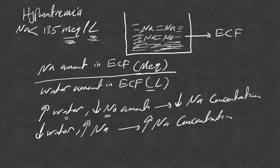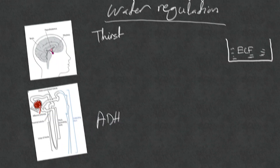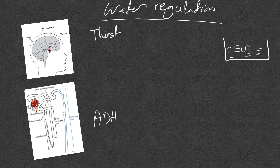Water balance is the main factor responsible for hypo- or hypernatremia. Sodium amount by itself will not cause hyponatremia. If there is decreased sodium intake, it will not cause hyponatremia on its own unless accompanied by increased water in the extracellular fluid. The sin behind all hyponatremia is excess water in the extracellular fluid — remember that very well.